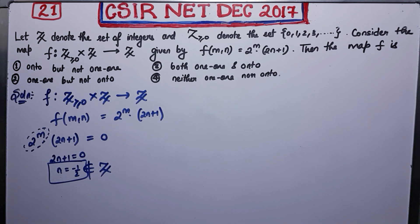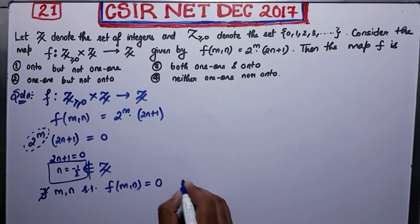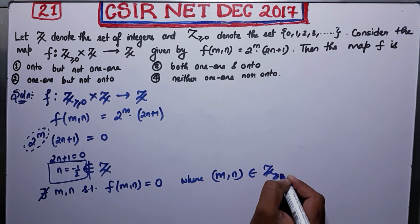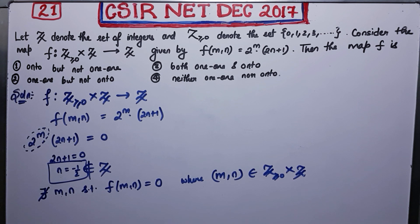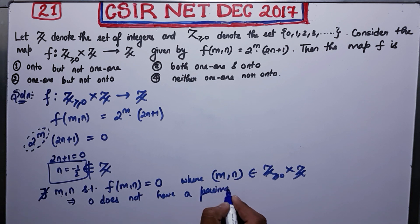So there does not exist m, n such that f(m,n) = 0 where m, n belongs to z≥0 cross z. From here we can conclude that 0 will never appear in the image of f — that means 0 does not have a pre-image. Since 0 has no pre-image, we can conclude that this map is not surjective.